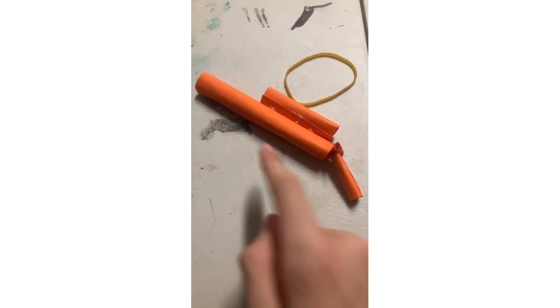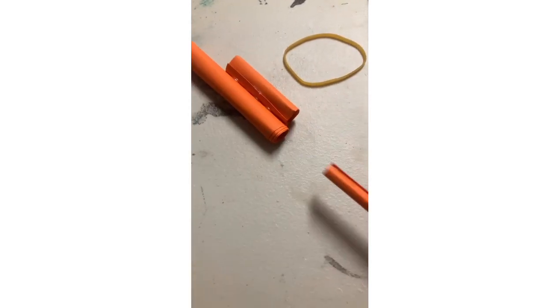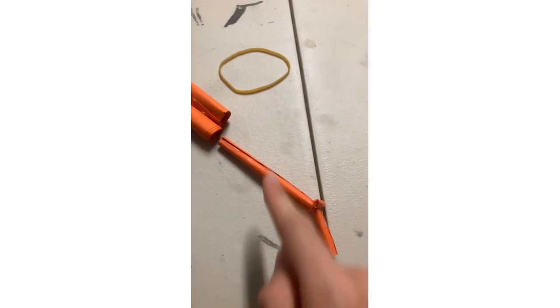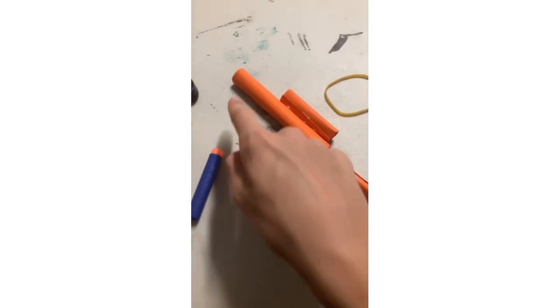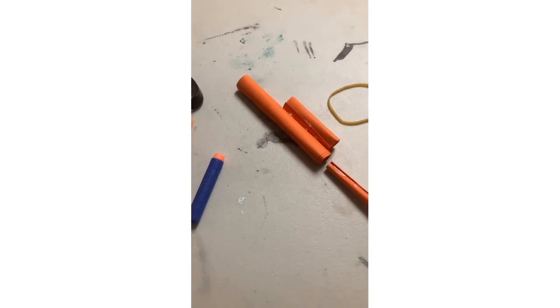It's almost done. So if you look, I have the two barrels. This part comes off. If you slide it in and wrap the rubber band around here and here and put the Nerf bullet in, it should be able to shoot.